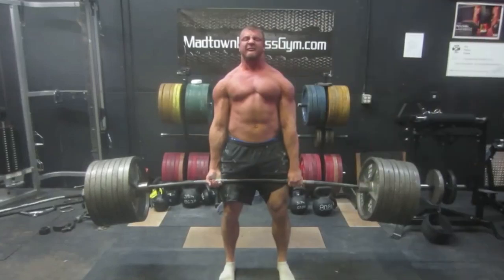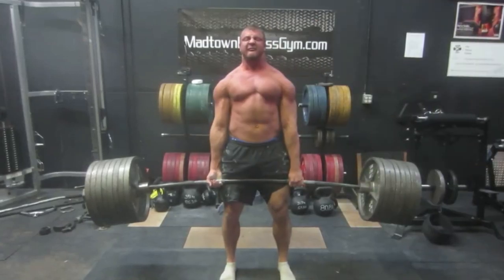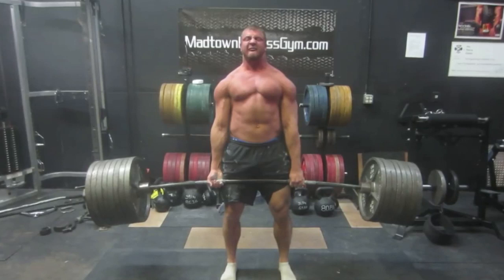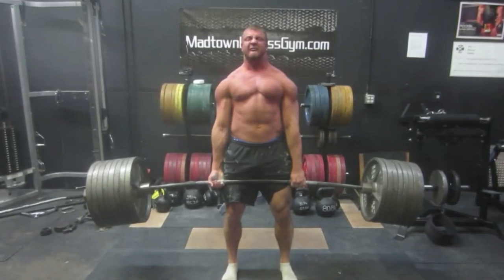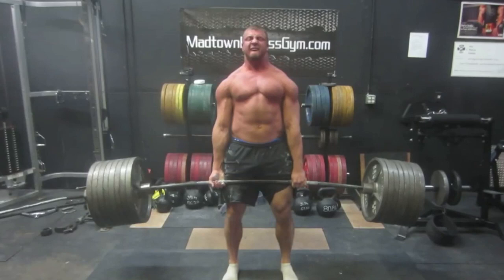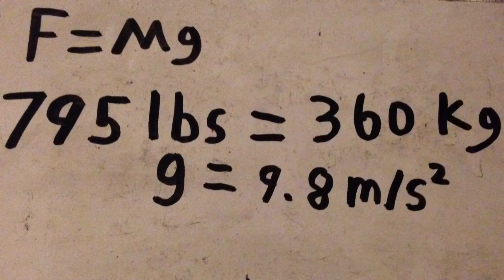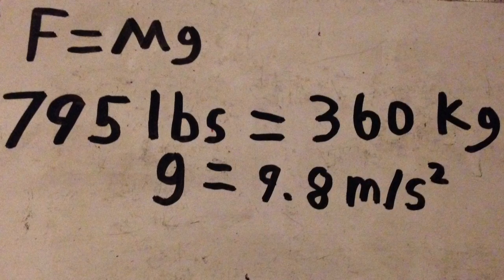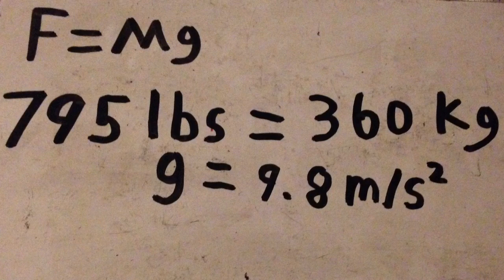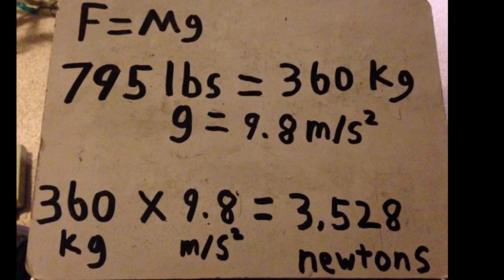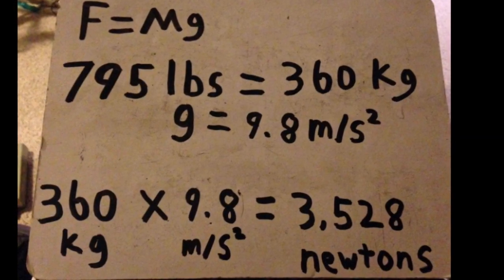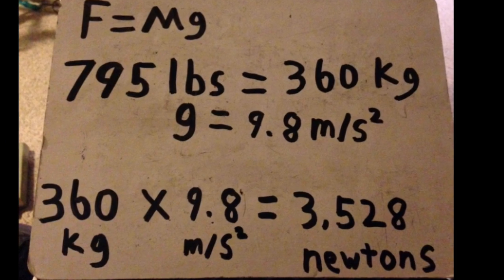With the help from Pete Rubish, I'm going to show you some simple principles of gravity. In this picture, Pete Rubish is holding up a 795-pound deadlift. Gravity is trying to push the bar down, but Pete is using the same amount of force to keep the bar steady. Because we know that F equals mg, all we have to do is insert our numbers: 795 pounds is equal to 360 kilograms, and the acceleration of gravity is 9.8 meters per second squared. We find that the answer comes out to be 3,528 newtons. That's a lot of force.